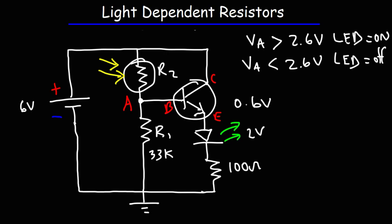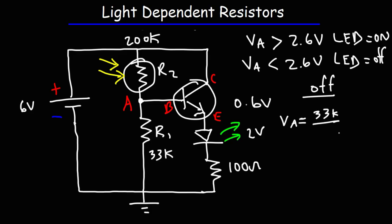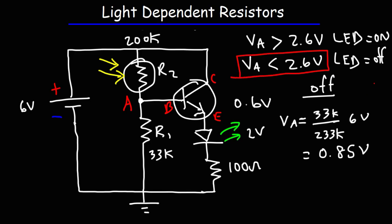When the main light is off, R2 will be approximately 200 kilo-ohms. Using the voltage divider equation, VA equals R1 (33K) divided by the sum of R1 and R2 (233K), times the battery voltage. So 6 times 33 over 233 gives us approximately 0.85 volts. VA is less than 2.6 volts, so the LED is off — when the main light is off, the LED is off.